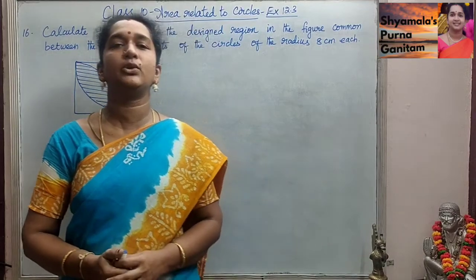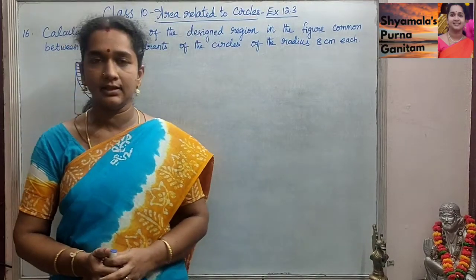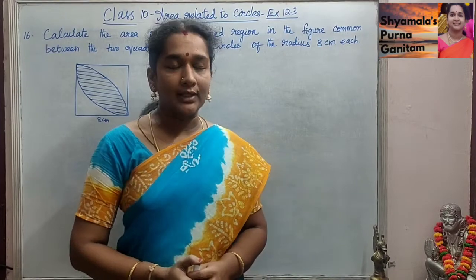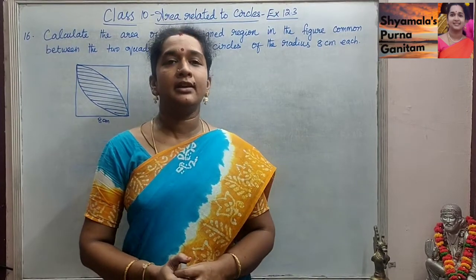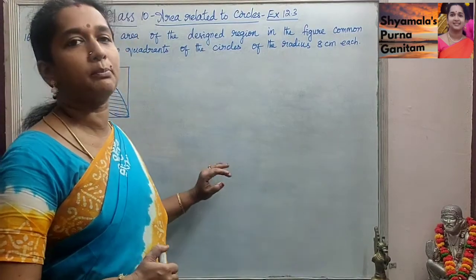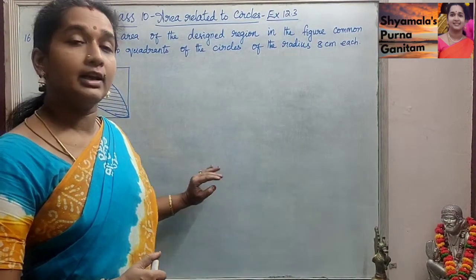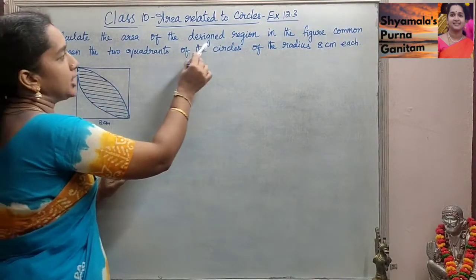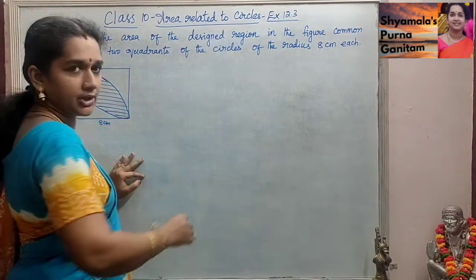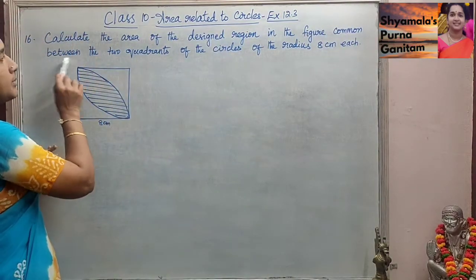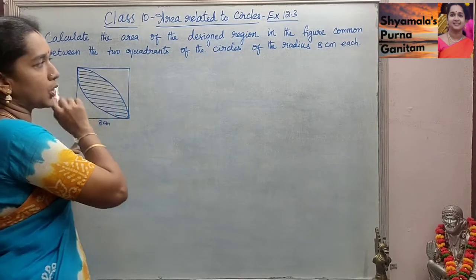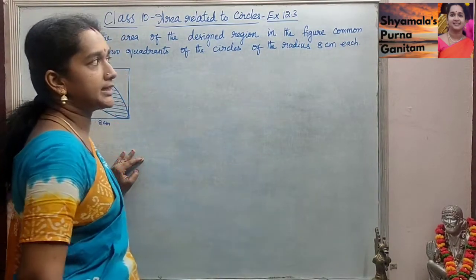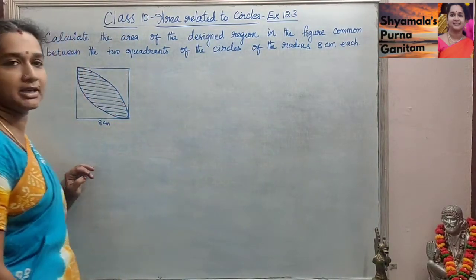Good morning students. In this class I will be doing Class 10 CBSE syllabus, 12th chapter, area related to circles, Exercise 12.3, the last sum of this exercise. Calculate the area of the designed region in the figure, common between the two quadrants of the circles of radius 8 cm each.